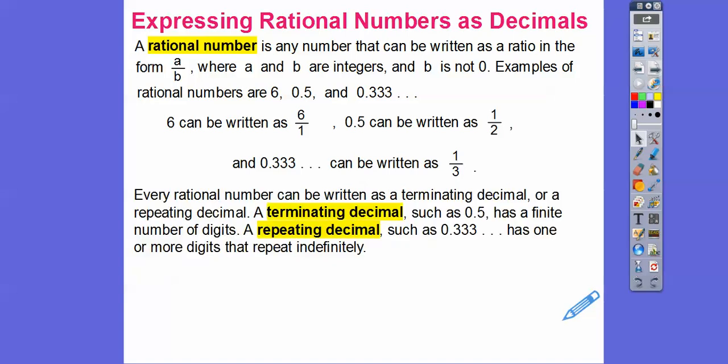Every rational number can be written as a terminating decimal or a repeating decimal. A terminating decimal like 0.5 has a finite number of digits, it just stops. A repeating decimal is like 0.33333, it just repeats and goes on forever and ever. It goes on indefinitely.